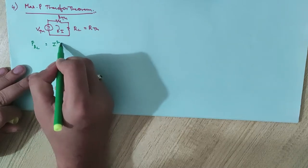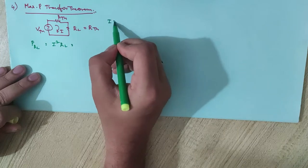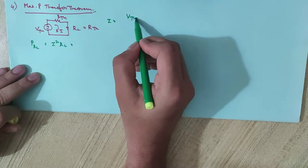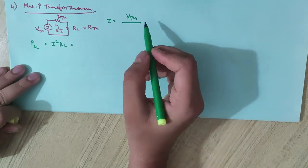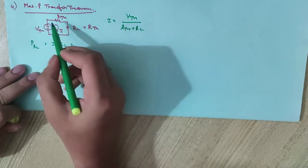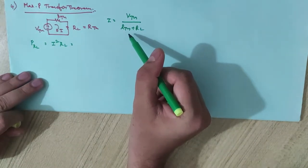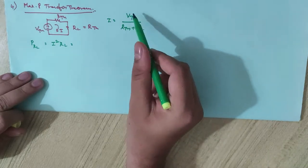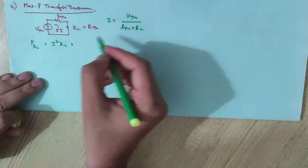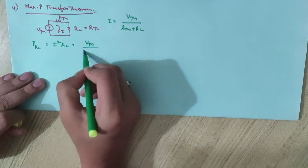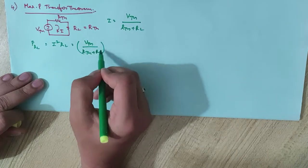Now let us prove this. We need to find the maximum power, so first see what is the power at load resistor RL. The power at load resistor RL would be I² × RL, where I = Vth / (Rth + RL), as these two are in series. So the equivalent resistance is Rth + RL. According to Ohm's law, voltage divided by resistance gives the current. Substituting, the power is Vth² / (Rth + RL)² × RL.